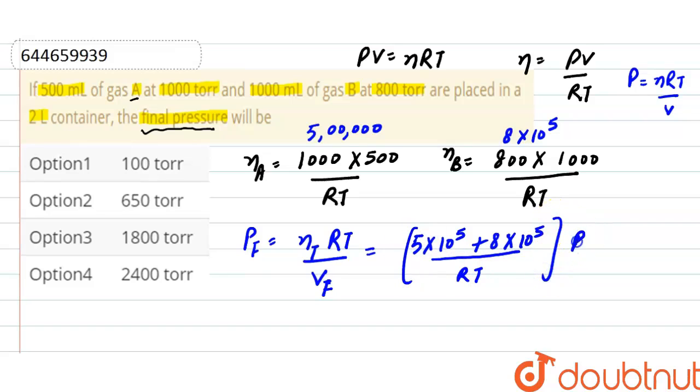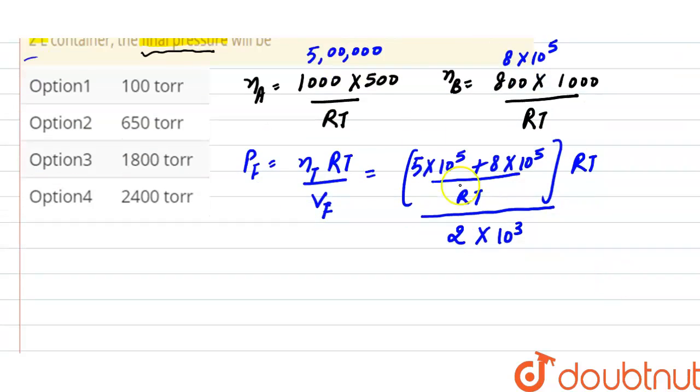And here, this RT divided by final volume. Here is 2 liters, so we will convert it into milliliters by multiplying it to 10 raised to the power 3. Here, after solving, final pressure equals: